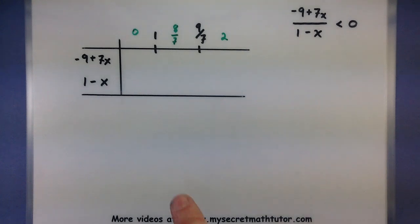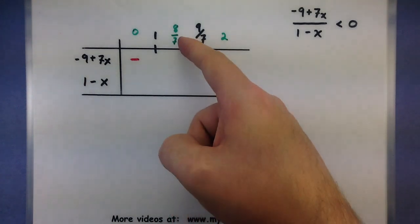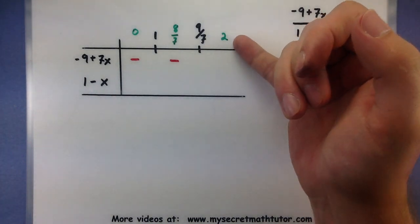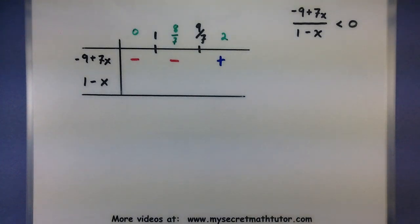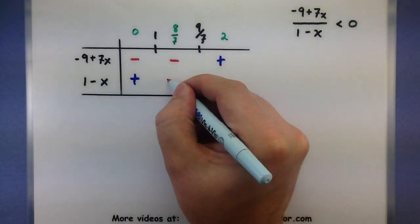Plugging 0 into the top: negative 9 plus 0 is negative. Plugging 8/7 into the top: negative 9 plus 8 is still negative. Plugging 2 into the top: negative 9 plus 14 is positive. Now for the bottom: 1 minus 0 is positive. For 8/7: 8/7 is just a hair larger than 1, so 1 minus something just bigger than 1 is negative. And for 2: 1 minus 2 is negative.